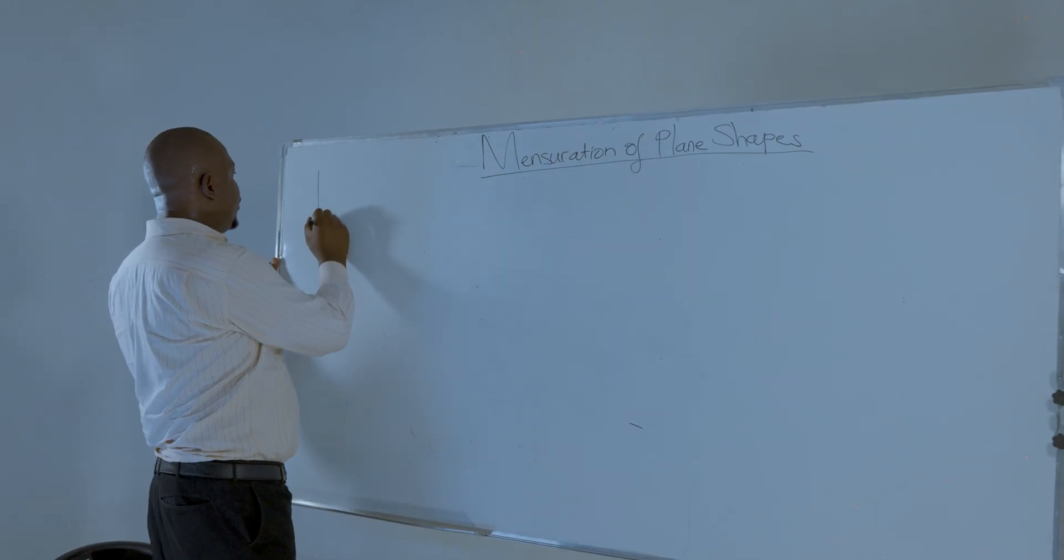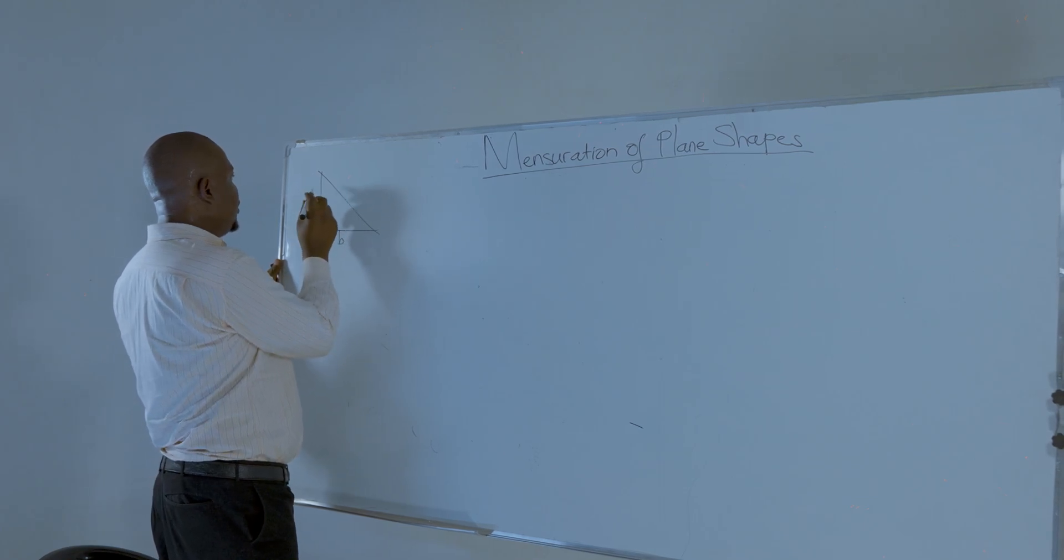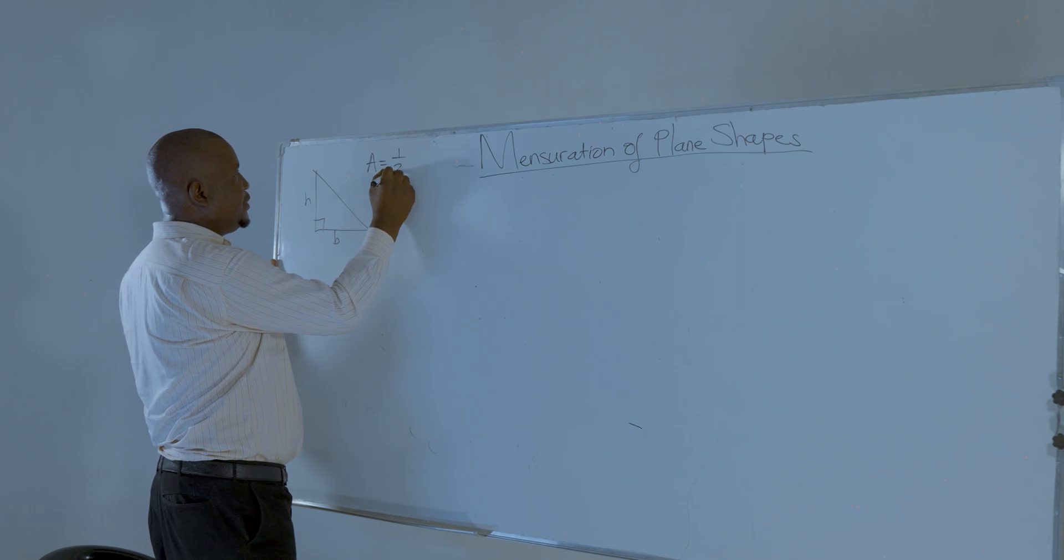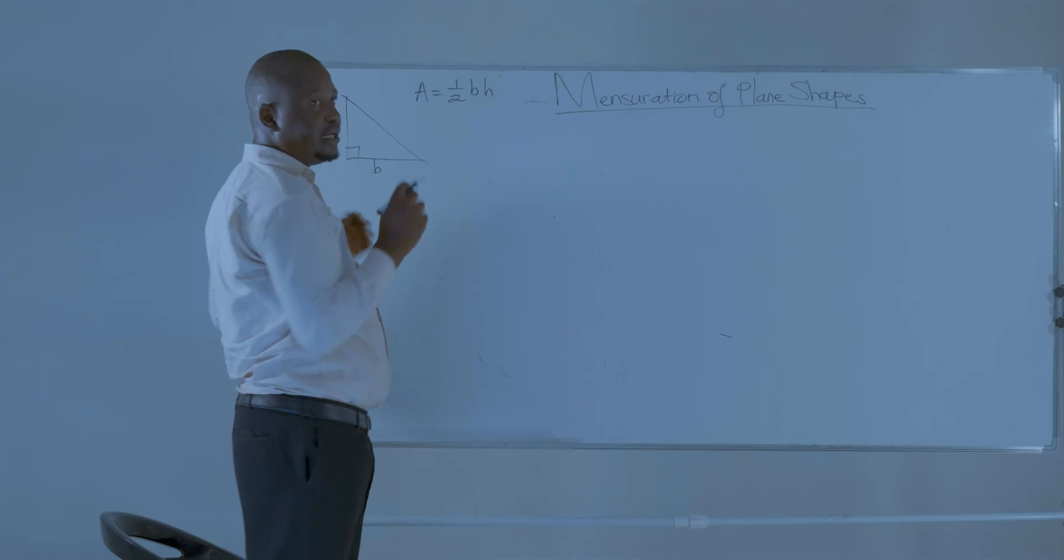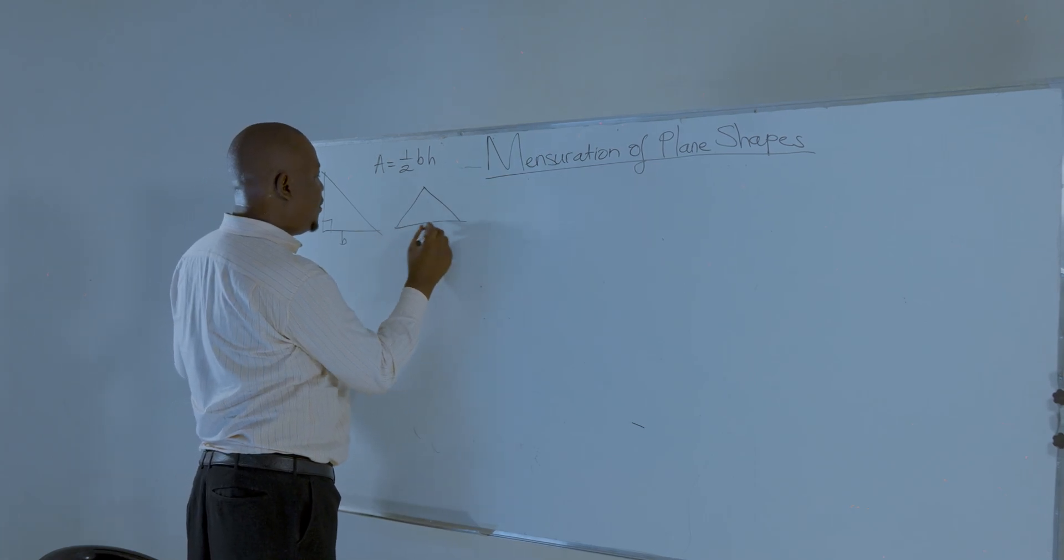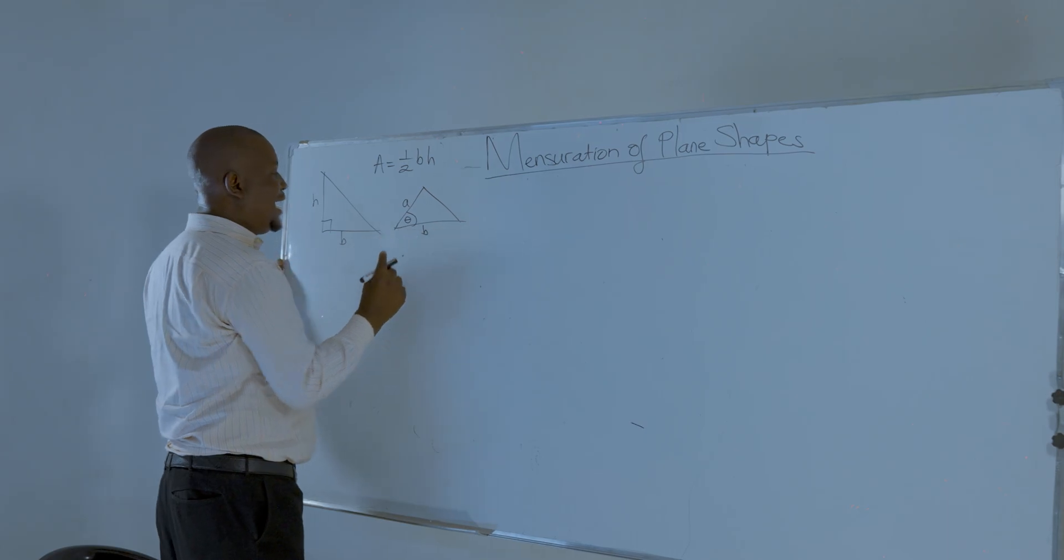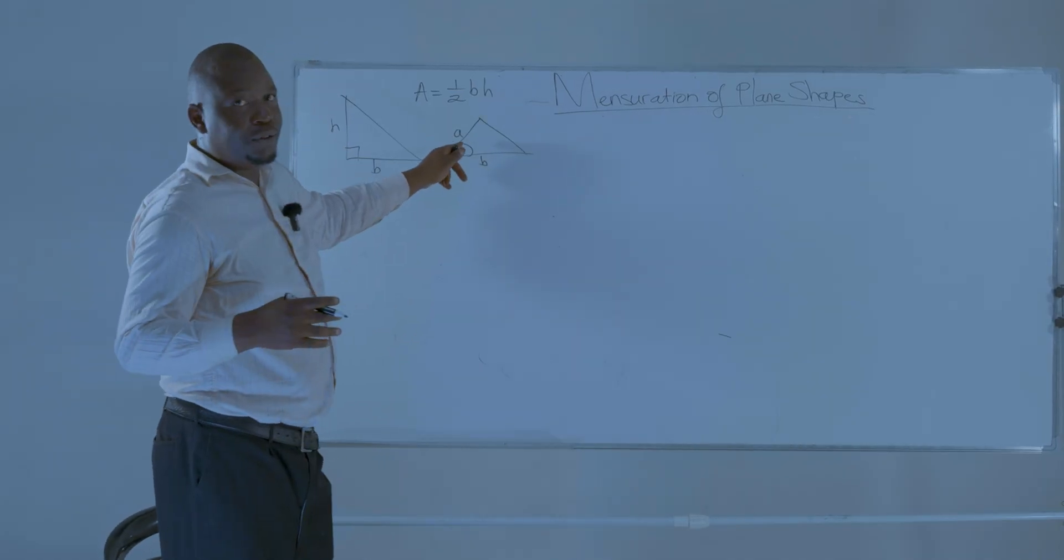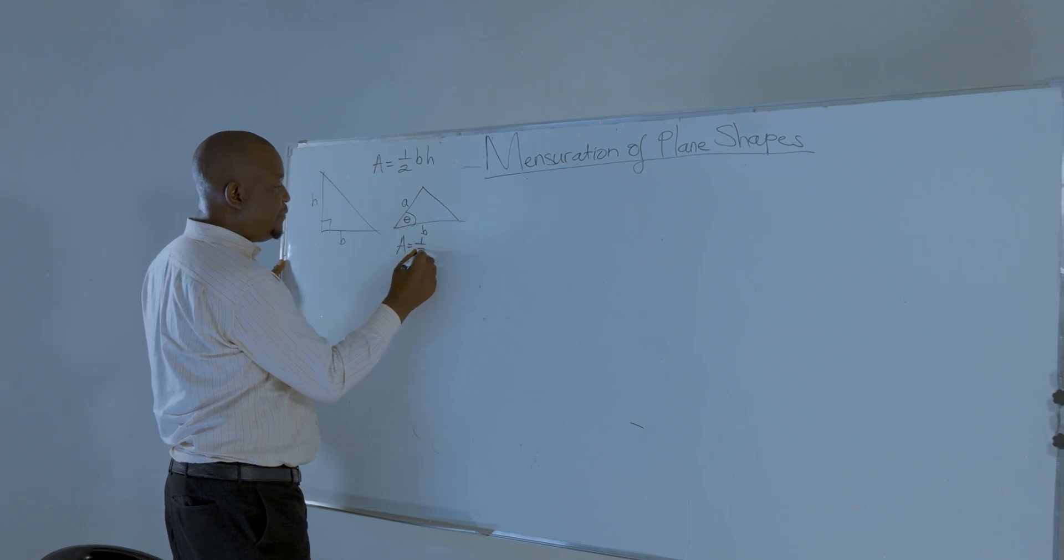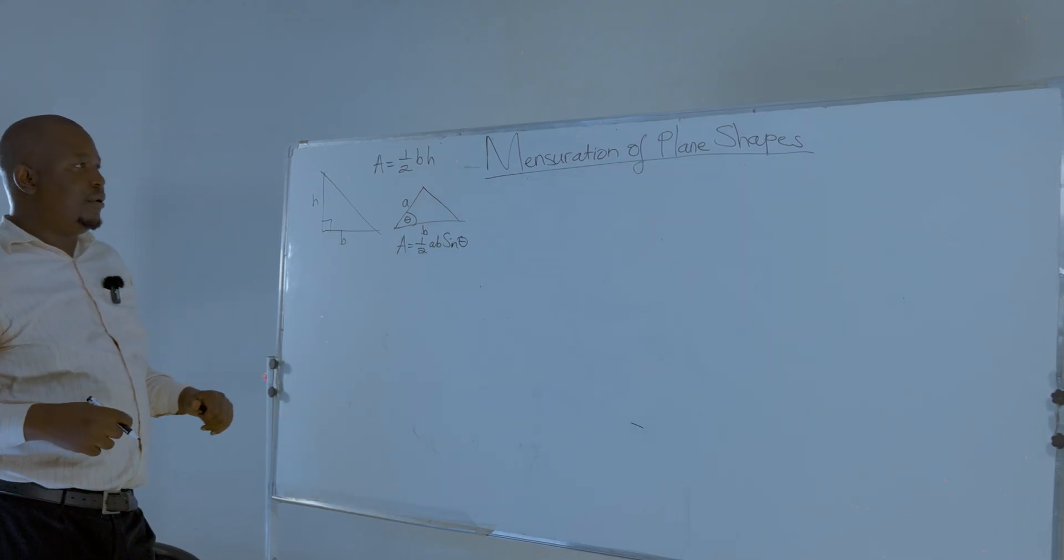I'm going to start with the triangle. The triangle area is given by half of the base multiplied by the height. Or you can use this formula: if you have side A and B and an included angle theta in between, the area of a triangle is given by half AB multiplied by the sine of theta.